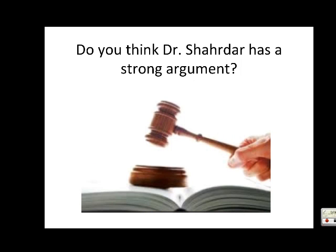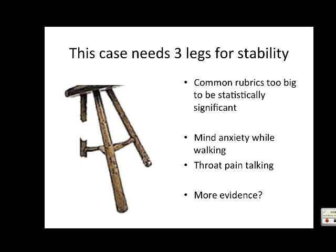So the next thing to think is: does Dr. Shadar have a strong argument? When I do a case, I always pretend I'm arguing before a judge - do I have a convincing argument? Someone said the case needs three legs for stability, like a stool. In this case, the common rubrics are too big to be statistically significant. There are only two rubric legs: 'mind, anxiety, while walking' and 'throat pain, talking aggravates.' It's only two legs - a very weak argument. So he is looking for more evidence.